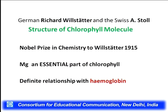It was left to the duo of Willstätter and Stahl to actually elucidate the structure of the chlorophyll molecule. Willstätter received a Nobel Prize in chemistry. They concluded that magnesium present in chlorophyll is an essential part — nothing happens without magnesium. They also found that the chlorophyll molecule has a definite structural relationship with hemoglobin, drawing an important parallel between the lifestyles of the plant and animal kingdoms.